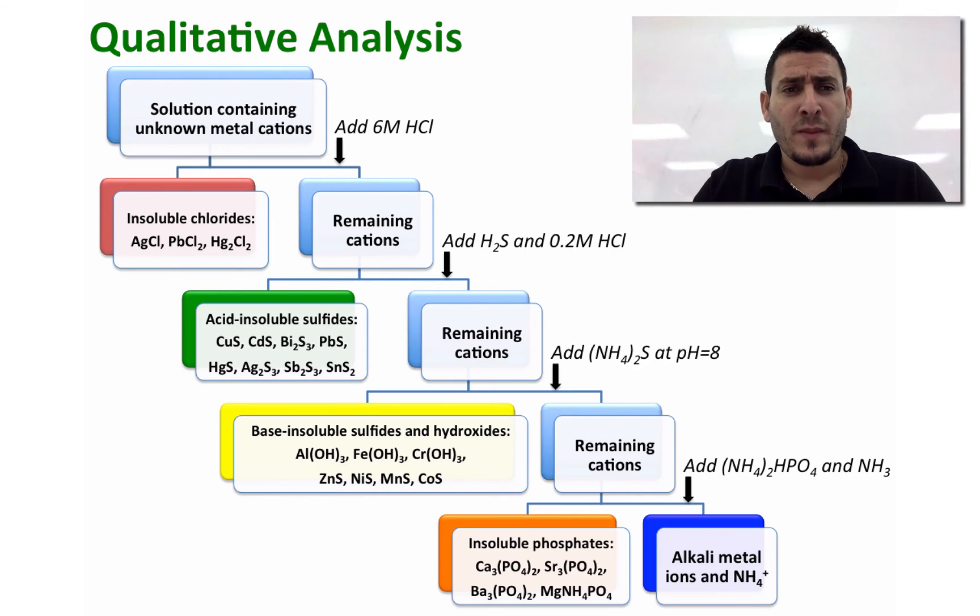For example, if from stage 1 I add 6 molar of HCl and no precipitate forms, this tells me that there's no silver or lead or mercury 1 ions in my solution. Then I move on to the second stage and so on.